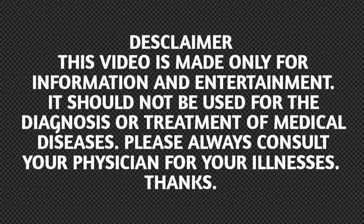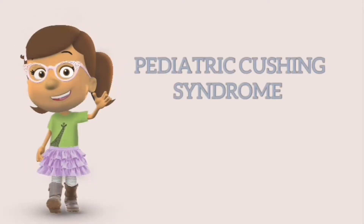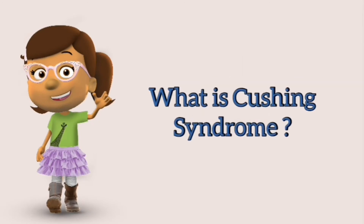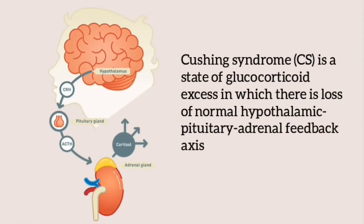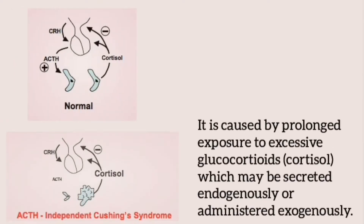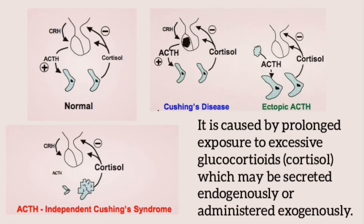Hello everyone, I am Dr. Anjum Rashid. Welcome to my YouTube channel. In this video I will talk about pediatric Cushing syndrome. Cushing syndrome is a state of glucocorticoid excess in which there is loss of normal hypothalamic-pituitary-adrenal feedback. It is caused by prolonged exposure to excessive glucocorticoids or cortisol, which may be secreted endogenously or administered exogenously.